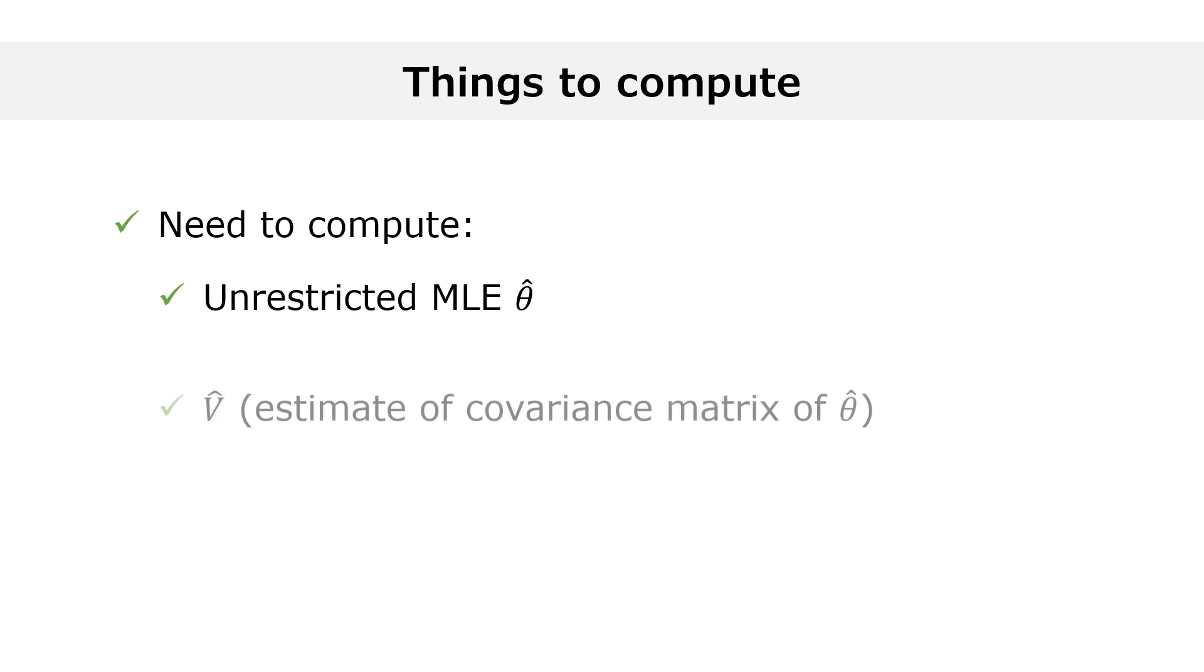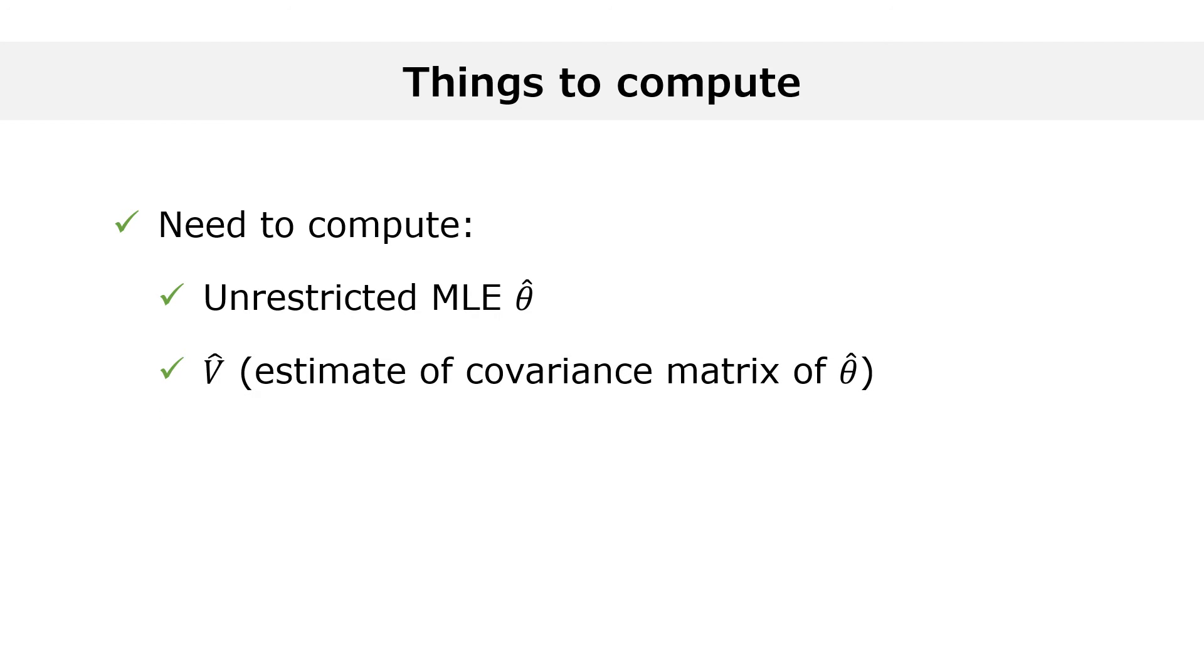The second quantity is v hat, an estimate of the covariance matrix of the maximum likelihood estimator. Third, we compute the Jacobian of the function g. The Jacobian is a matrix whose entries are equal to the partial derivatives of the entries of g with respect to the entries of theta. The partial derivatives are evaluated at theta hat.